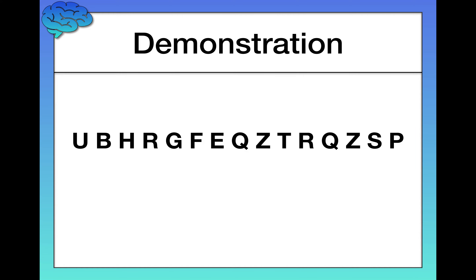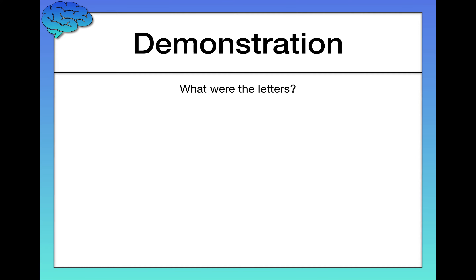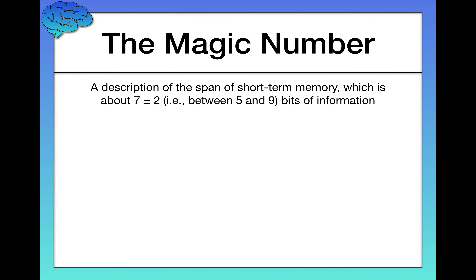Now let's do a crazy one: U-B-H-R-G-F-E-Q-Z-T-R-Q-Z-S-P. Chances are that was basically impossible. In live classes no one is ever able to get this — they can get the first few letters, maybe the last couple, but in general it's very, very hard. This is an illustration of the magic number — a description of the span of short-term memory, which is about seven plus or minus two bits of information. Most people can hold between five and nine bits of information. That last sequence had 15 bits, well beyond the magic number, making it basically impossible.